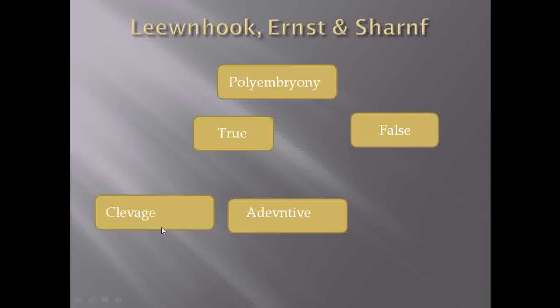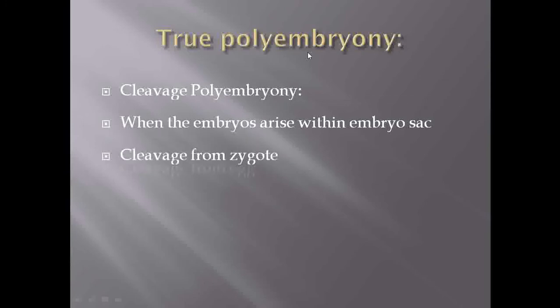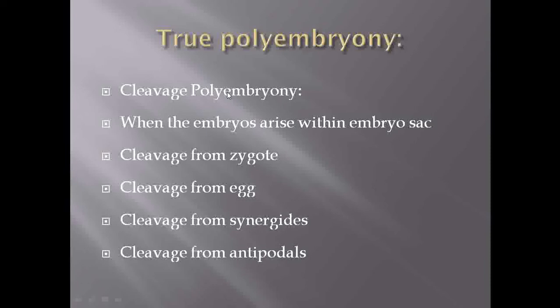Now studying in detail: cleavage polyembryony means whenever the embryos arise due to the division of cells present in the embryo sac. There is cleavage from zygote, cleavage from egg, cleavage from synergids, and cleavage from antipodal cells. We will discuss each one. First, the cleavage from zygote.